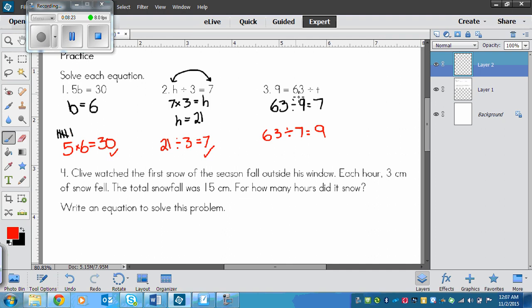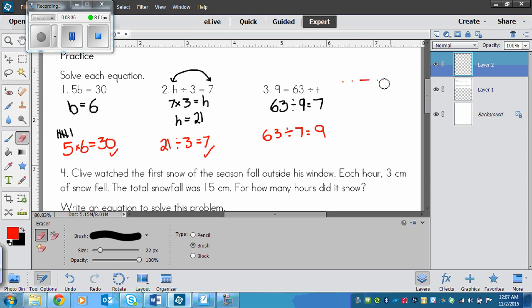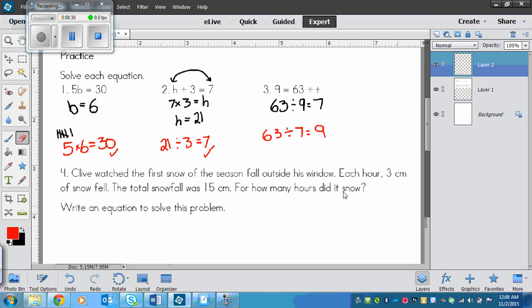You could also draw a picture if you don't have your agenda. You could say, okay, I need 63 dots, and I have 9 groups. How many is in each group? So you start out drawing dots. Or you could get manipulatives, little counters, and you could count them out. There are many ways to figure this out.